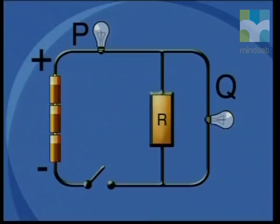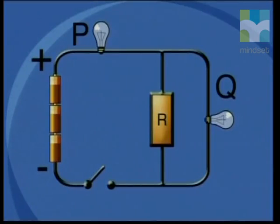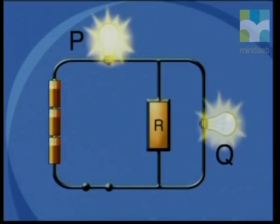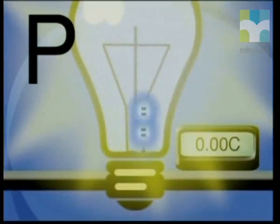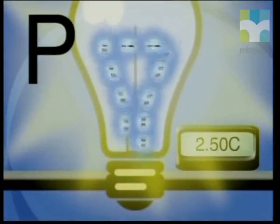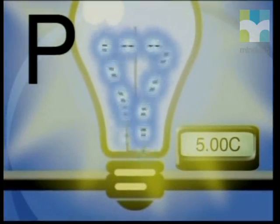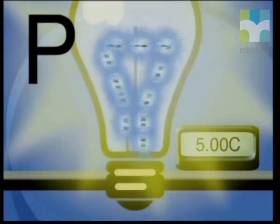Let us use a model to better understand this concept. Here is a model of the circuit with a battery of cells, light bulbs P and Q, resistor R and a switch. Let's count the number of coulombs of charge passing through light bulb P when the switch is closed: 1.25, 2.50, 3.75, and finally 5 coulombs of charge passed through in one second.